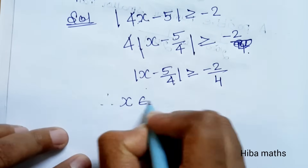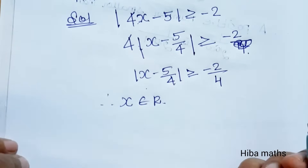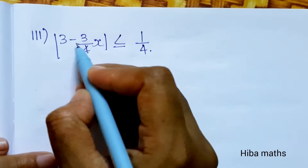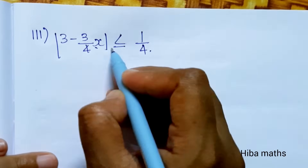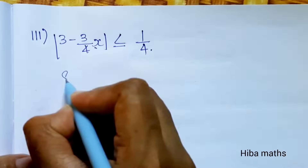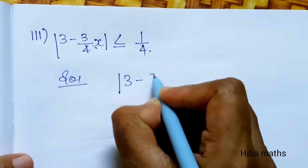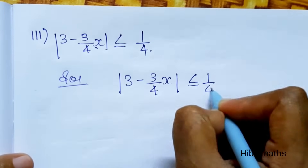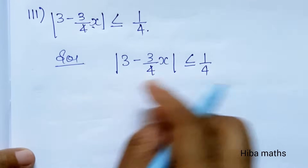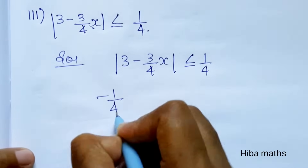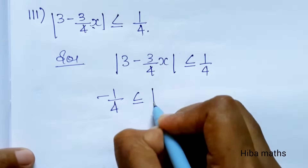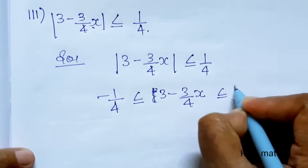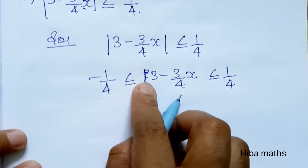Result: minus 1 by 4, so x belongs to all real numbers. Subdivision 3: 3 minus 3 by 4 into x is less than or equal to 1 by 4. We remove the modulus and write: minus 1 by 4 minus 1 is less than or equal to 3 minus 3 by 4 x is less than or equal to 1 by 4.